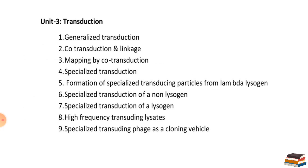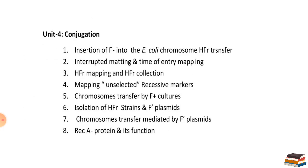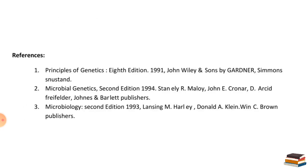Unit 3 covers transduction — different types of transduction including generalized transduction and specialized transduction. Unit 4 covers the conjugation method: how gene transfer occurs through conjugation between bacteria, what are HFR, F-plus, and F-minus, and the function of related proteins. All these topics are studied under Paper 2, conjugation.